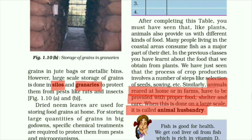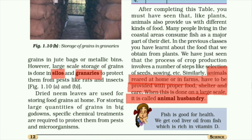After completing this table, you will see that like plants, animals also provide us with different kinds of food. Many people living in coastal areas consume fish as a major part of their diet. We have studied the food we obtain from plants, and the process of crop production involves many steps like selection of seeds and sowing. The animals have to be provided with proper food, shelter, and care. When this is done on a large scale, it is called animal husbandry.